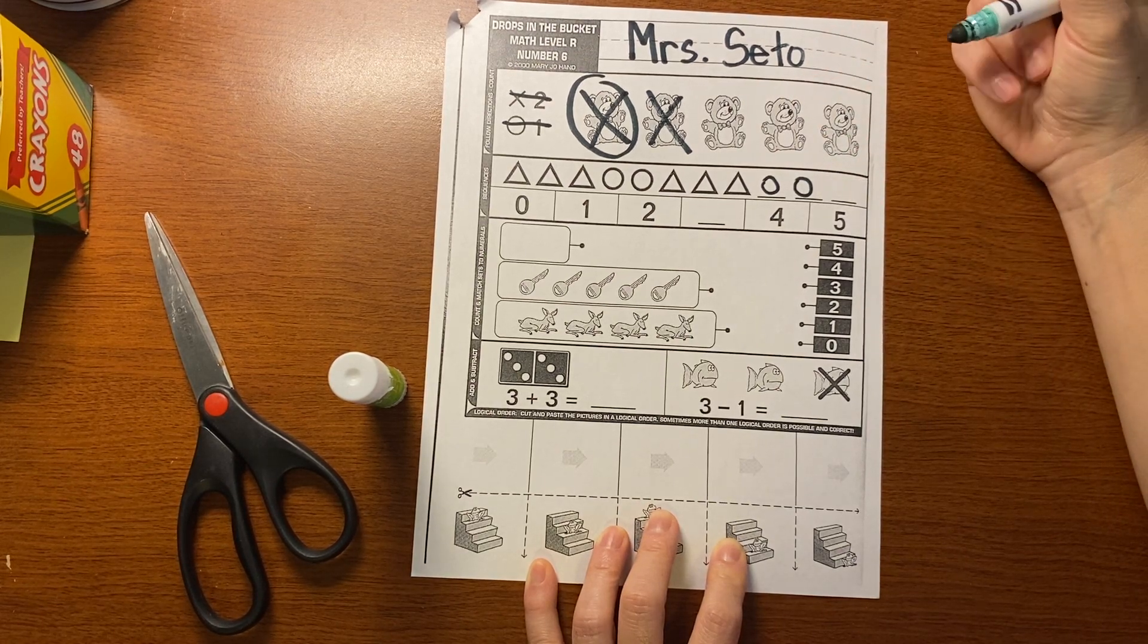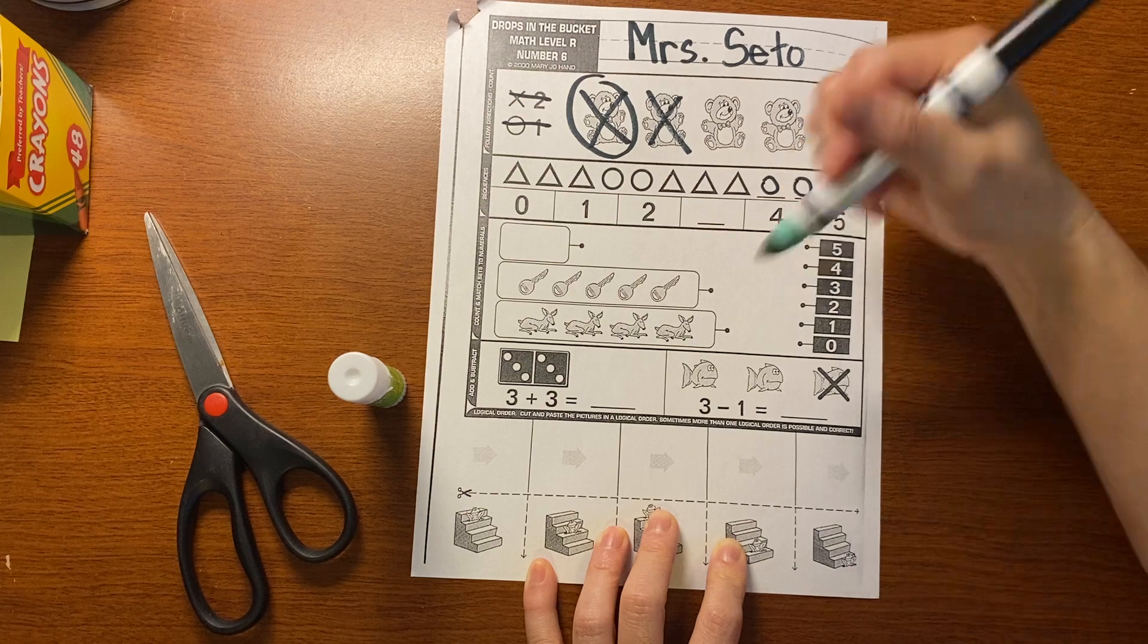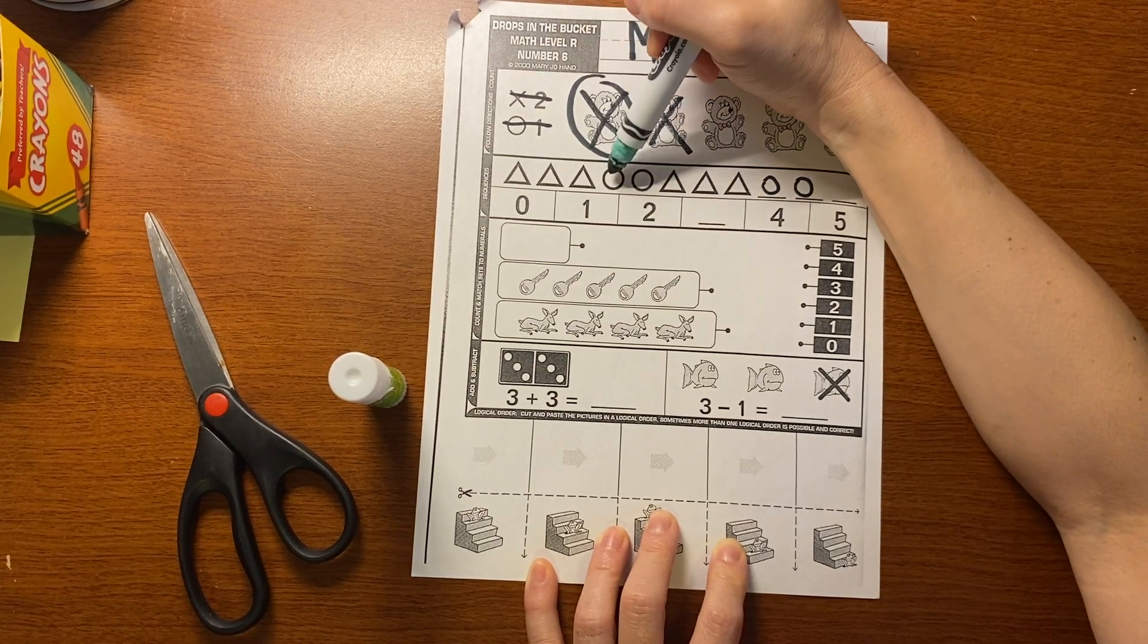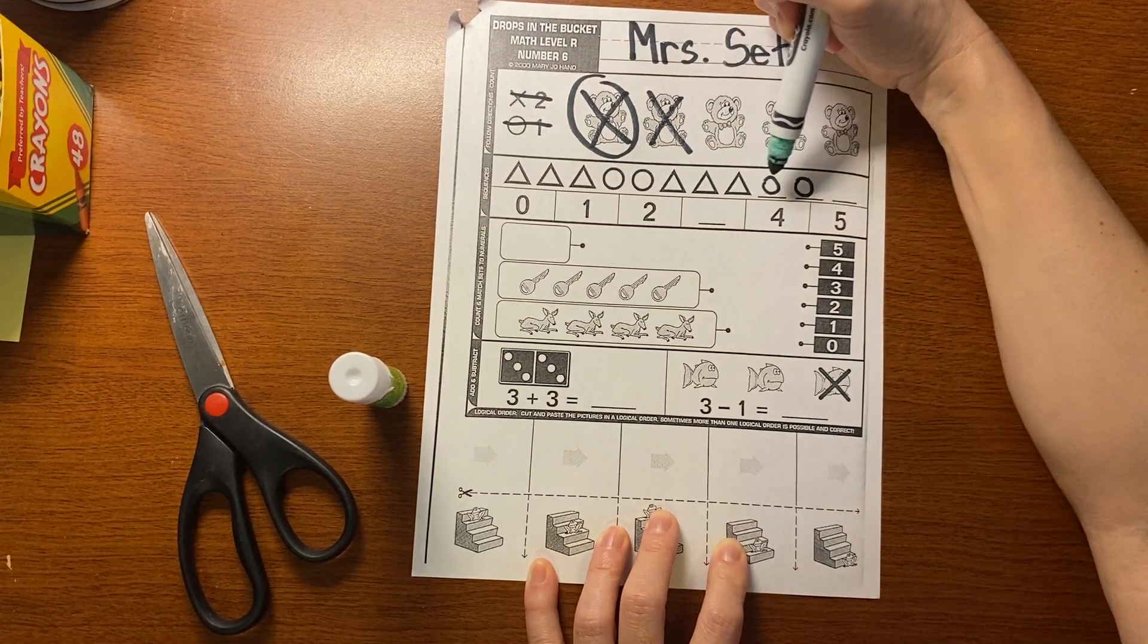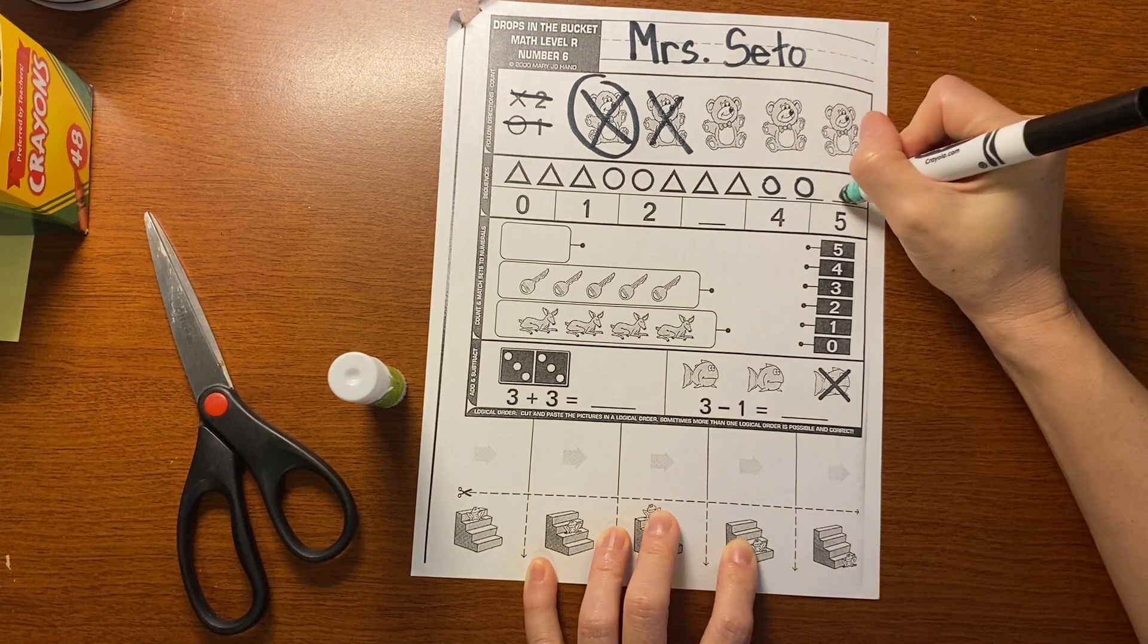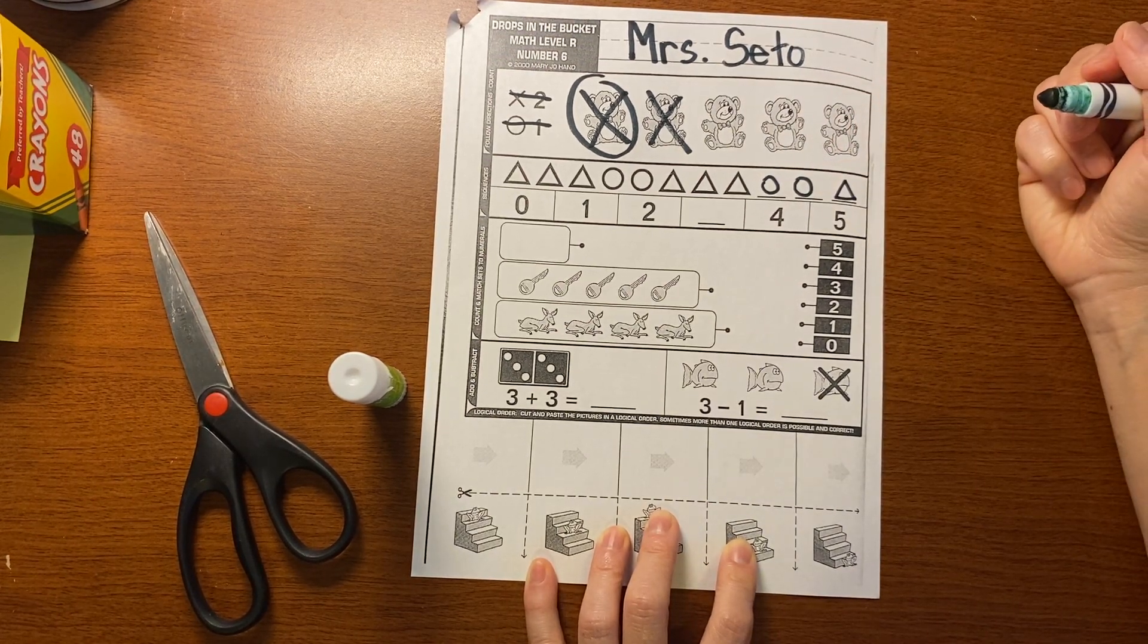But what comes next? It helps me to say it again. So I'll say triangle, triangle, triangle, circle, circle, triangle, triangle, triangle. Did you get the same pattern as me?